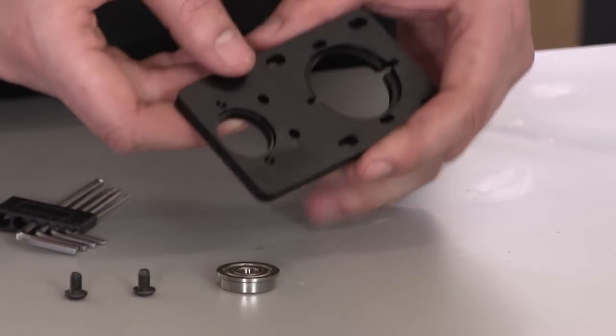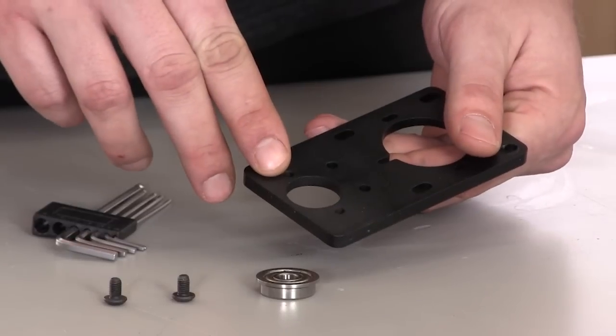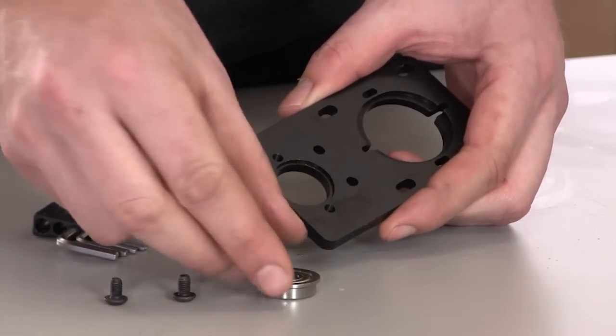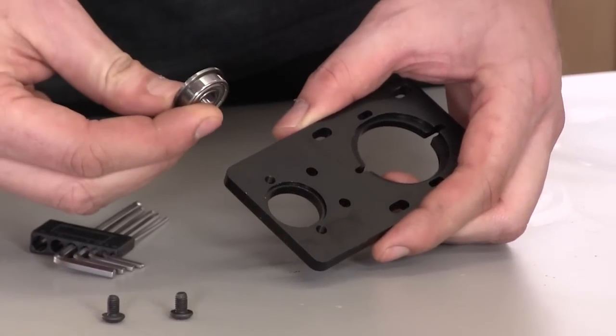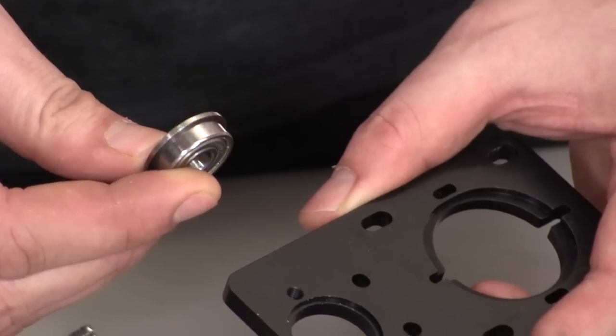Now we're going to assemble the Z-axis of your X-carve. Take a look at the Z-plate that's provided. There's a large hole that's designed to accept a flanged bearing. One side is recessed slightly and the other is not. We'll be inserting the bearing from the recessed side.